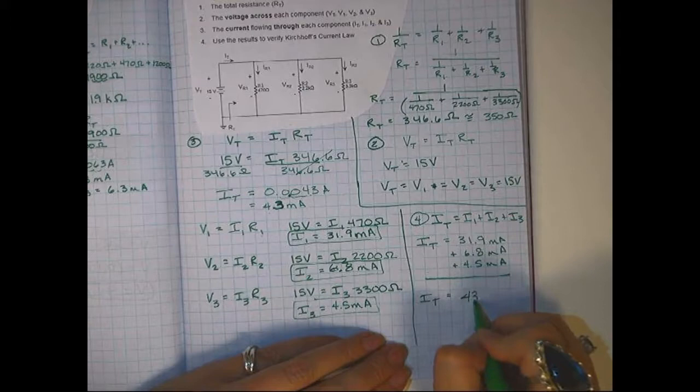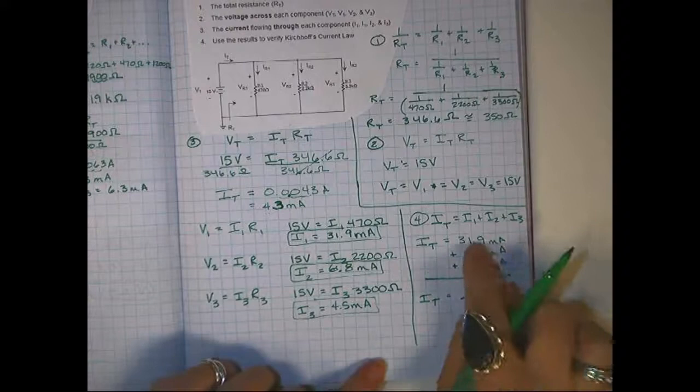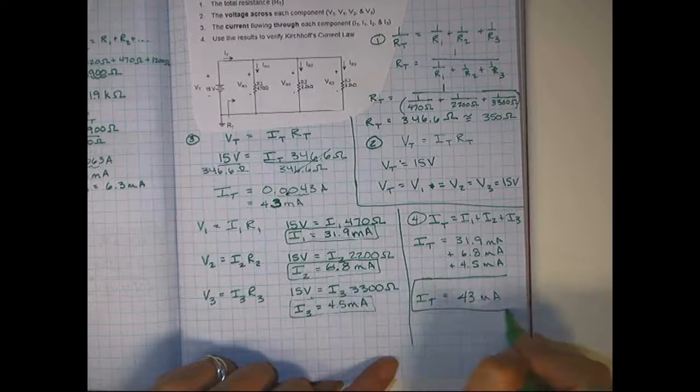It may be off a little, or 43 milliamps. It may be off a little bit because we rounded these numbers in the middle steps, but it should be very close.